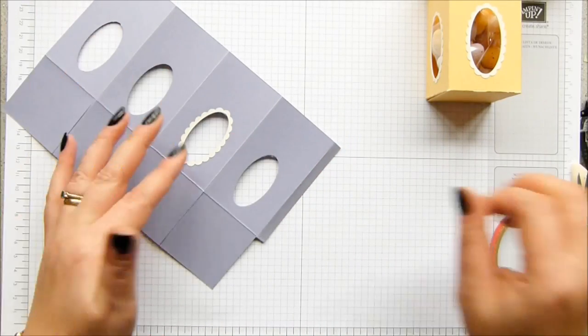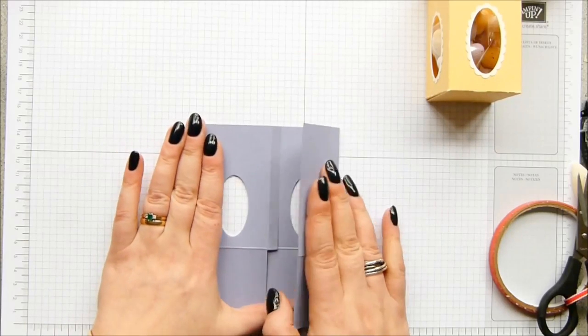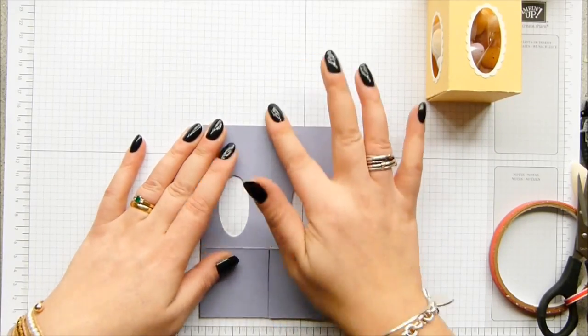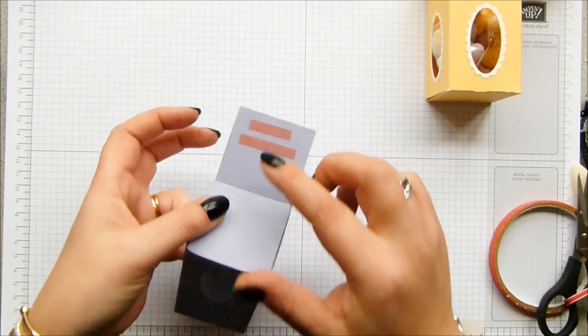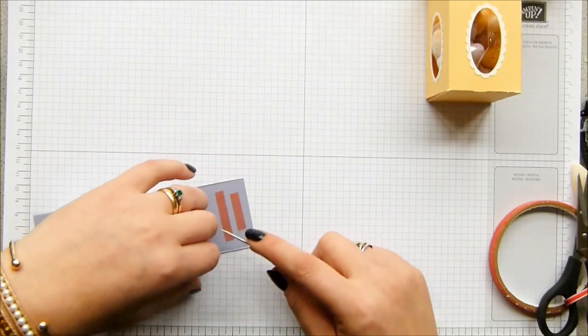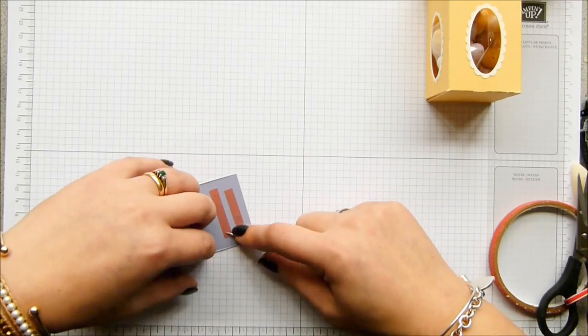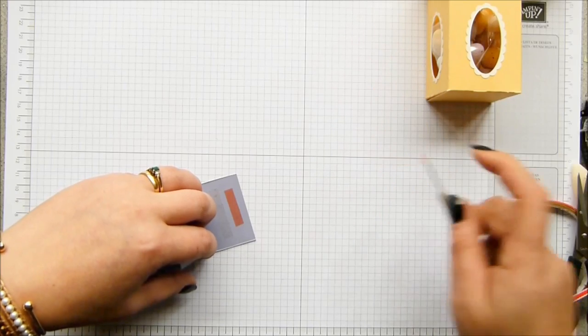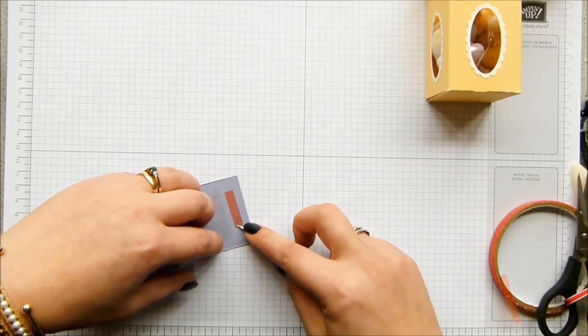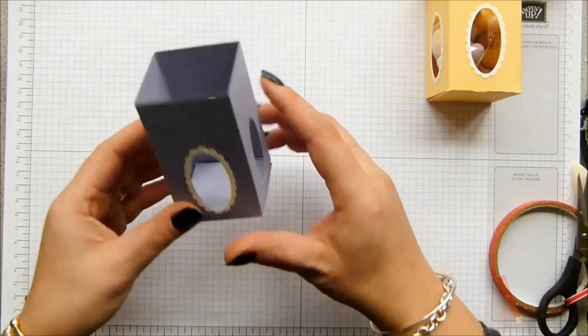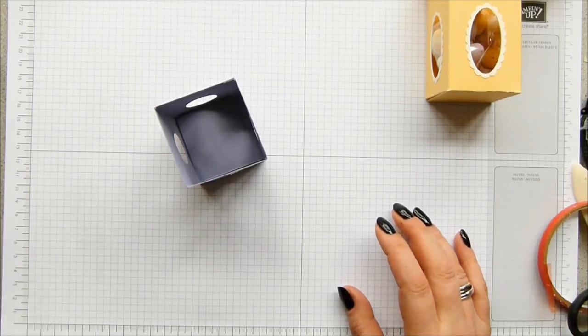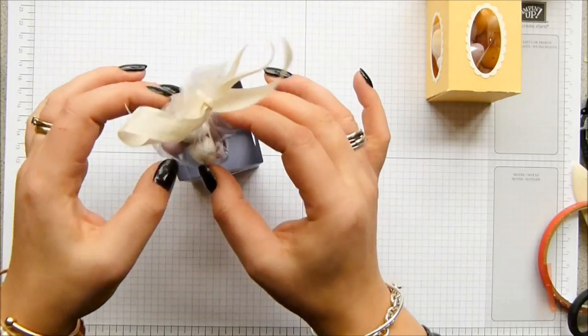You could maybe put some eggs, some little chicks along there. That would look cute, wouldn't it? Okay, so sides in, then the back. This is the one with the adhesive, so that's the front. And that really is your box made. So you pop your little treats inside. They will fit perfectly.